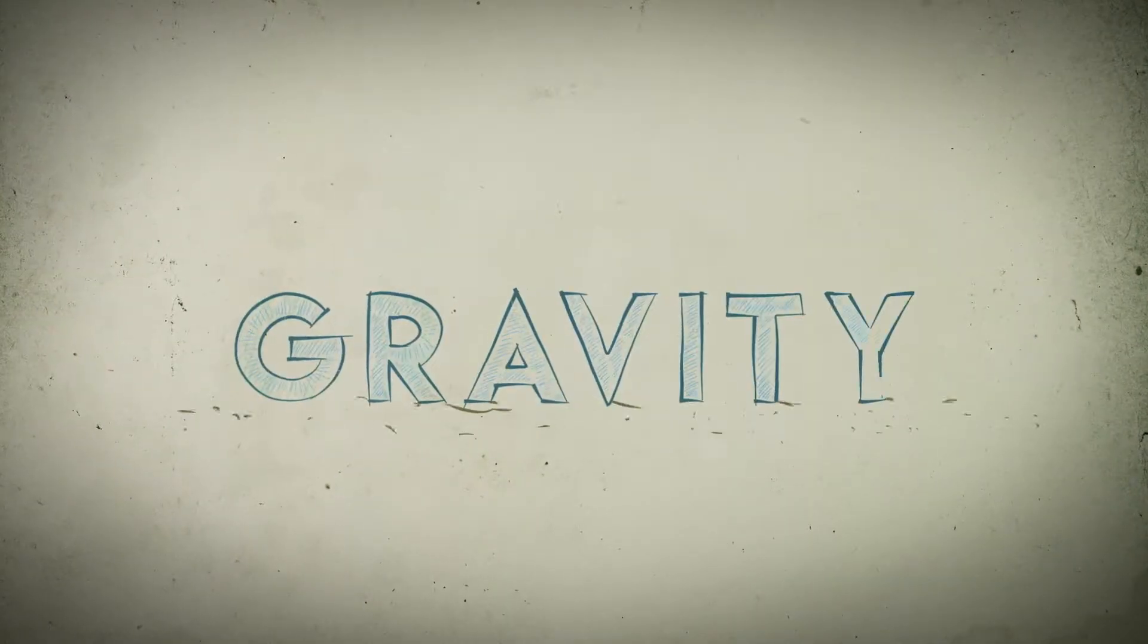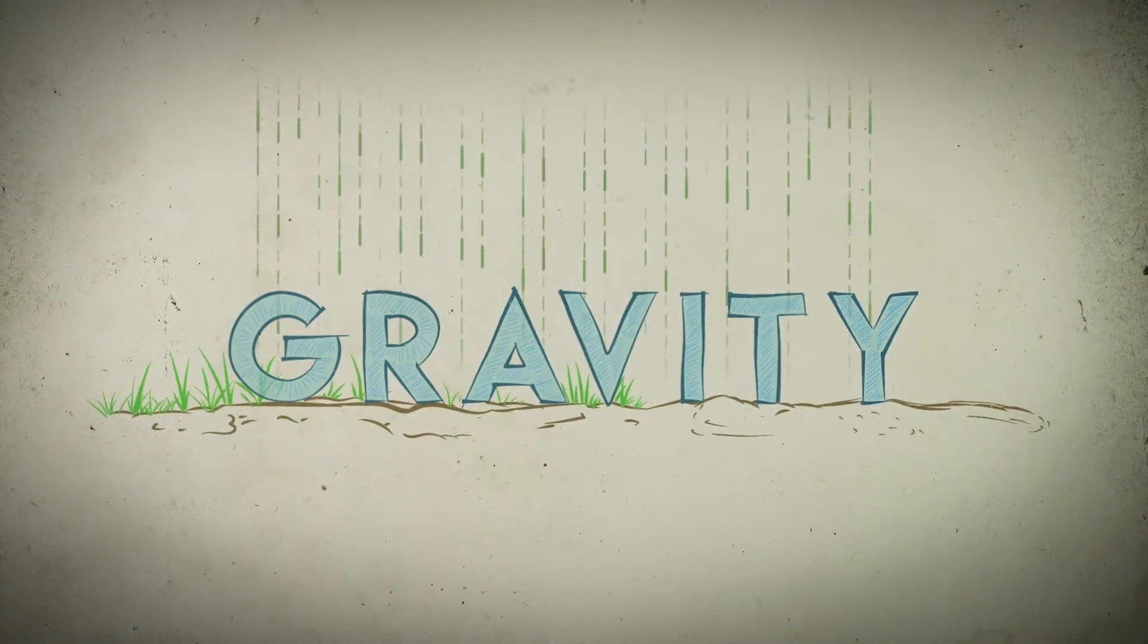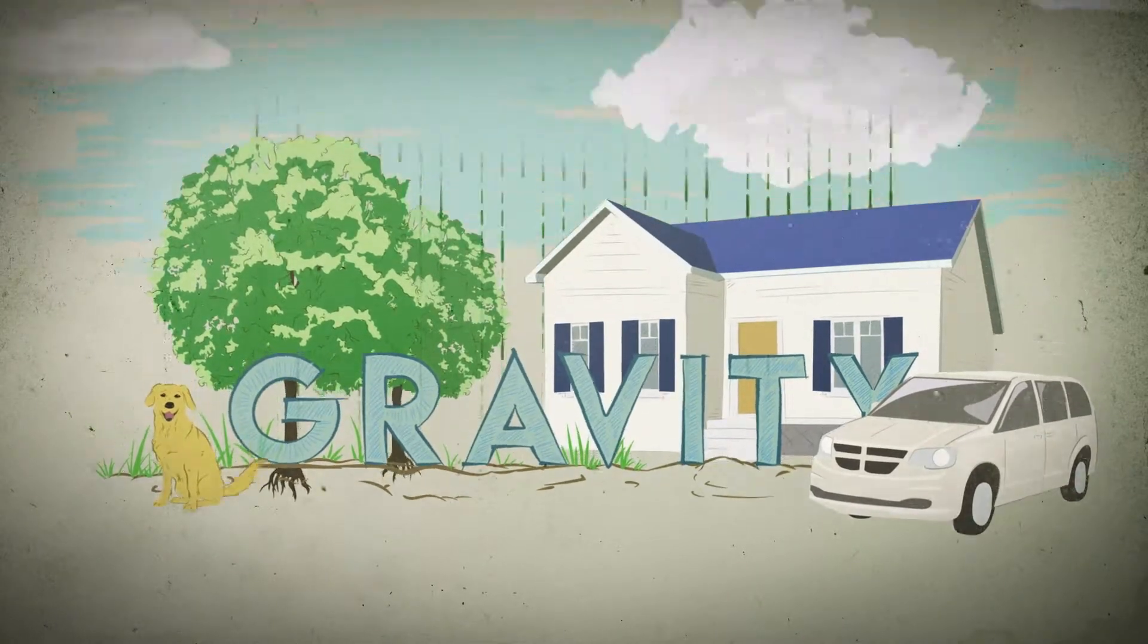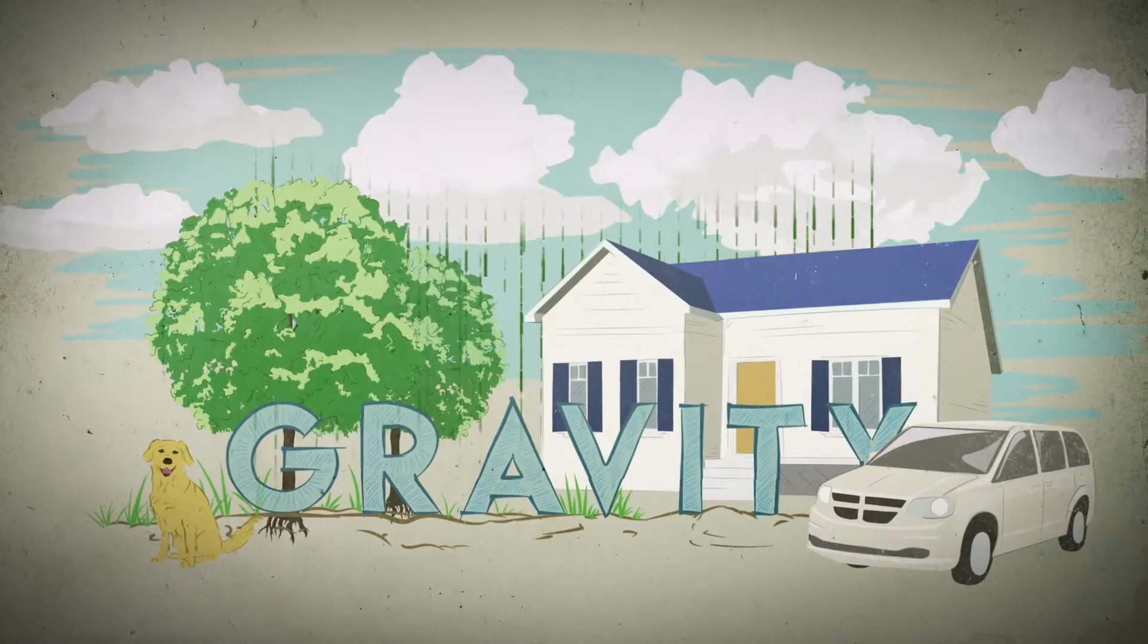To talk about how we remove something from a planet we're going to have to talk about two forces of nature. Firstly, the force of gravity. Gravity is the thing which is holding you down to the planet, but if you think about it, it's also what is holding the atmosphere down onto the planet as well.